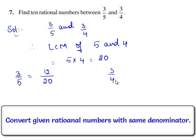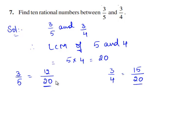3 by 4 can also be written as with denominator 20, 4 times 5 is 20 and 3 times 5 is 15. Therefore 3 by 4 is also equal to 15 by 20. Now let us find the equivalent rational numbers for 12 by 20 and 15 by 20.